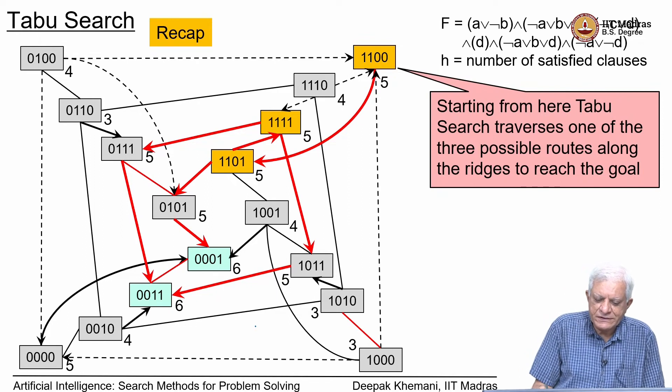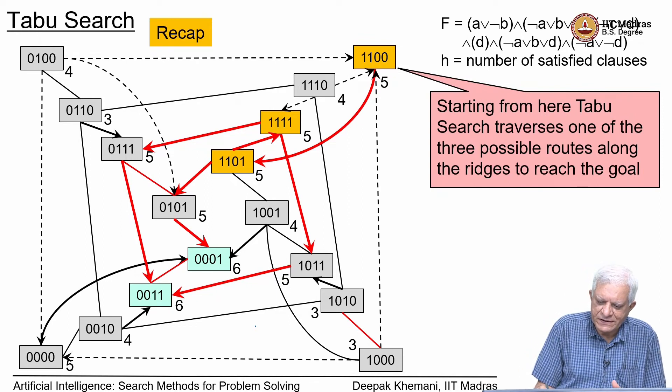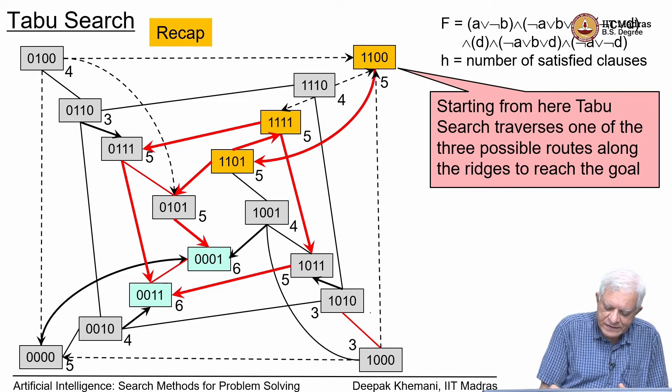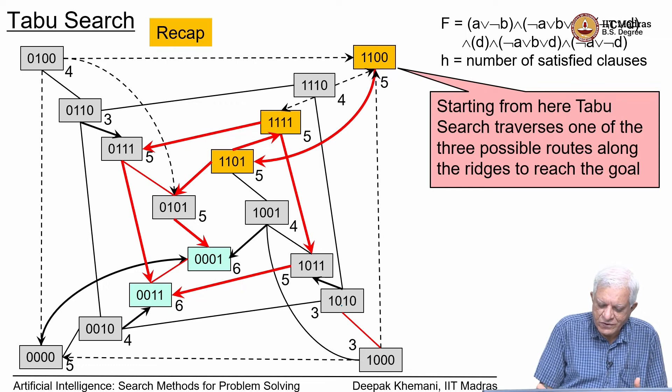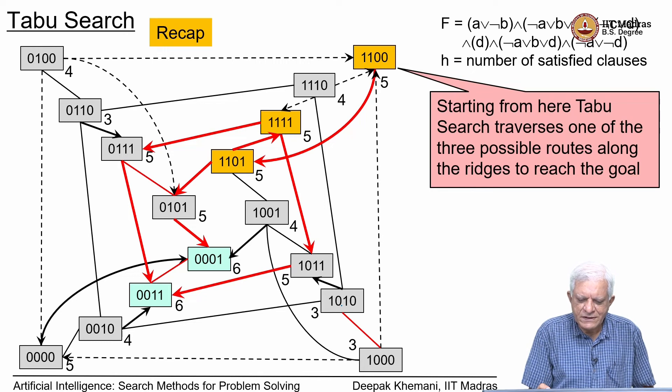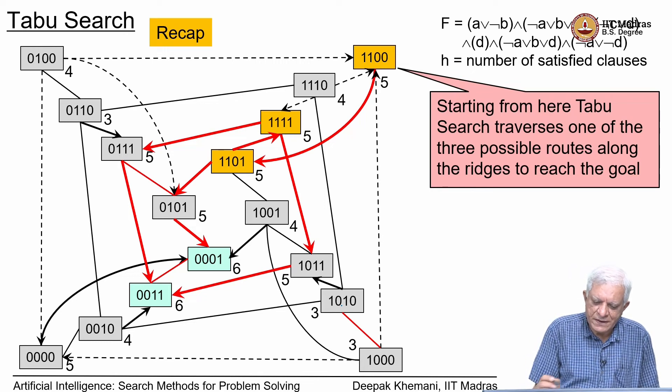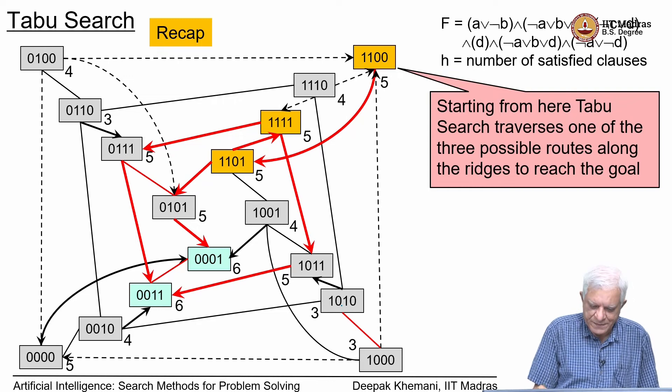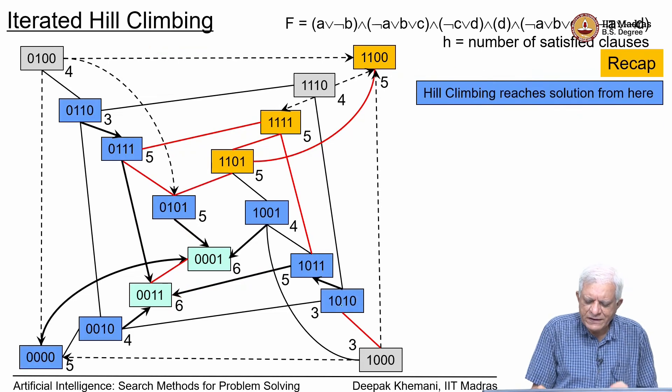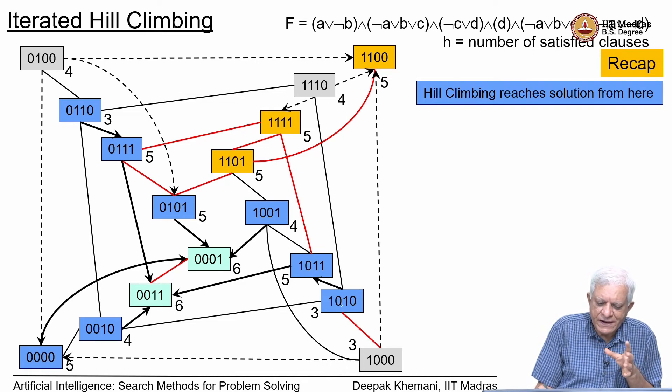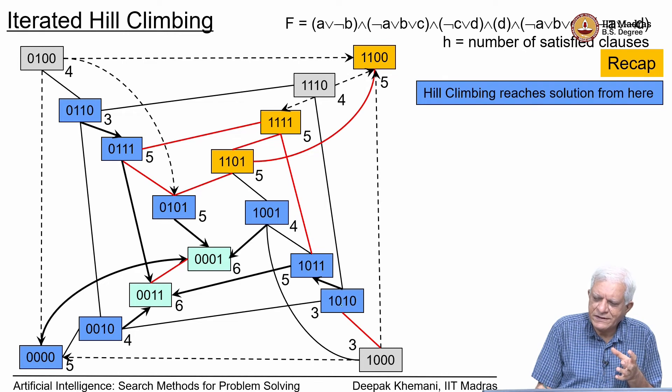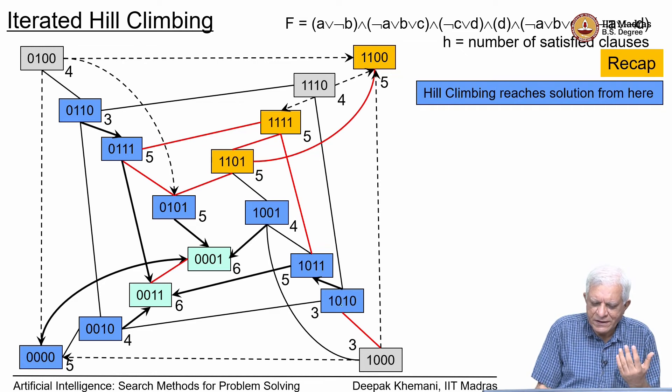This is just a recap of the taboo search method that we had studied, in which we took this formula of 6 clauses and 4 variables. That is why every candidate has got 4 bits - 1, 0, 1, 0 or 1, 0, 0, 1, and so on. We had seen how taboo search could find a path even from a local maxima to a global maxima. Then we had mentioned the fact that what is the sanctity of starting from one particular point, especially in these solution space search problems where you are interested only in the goal node which satisfies a certain property. The fact that we started with something is of no importance.